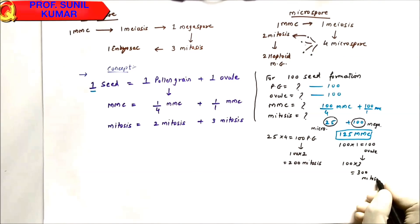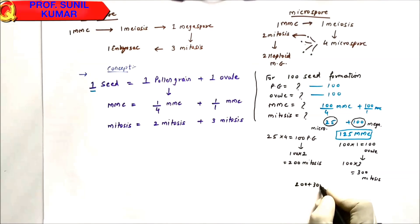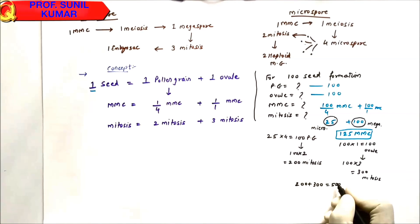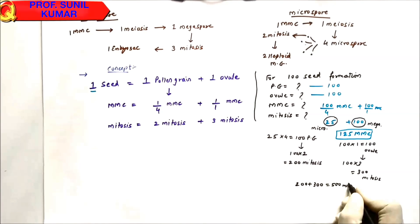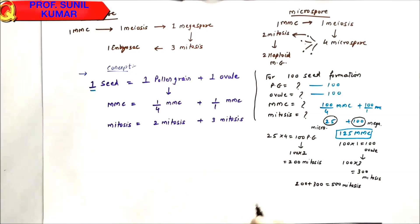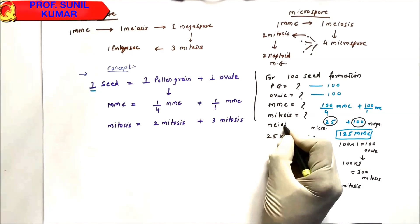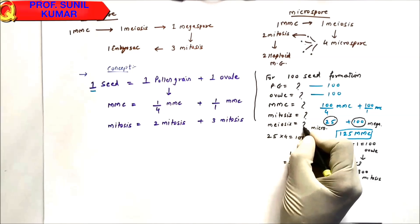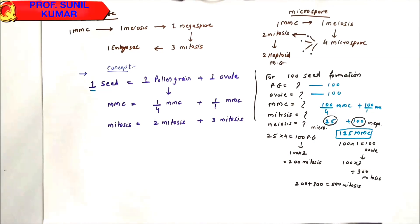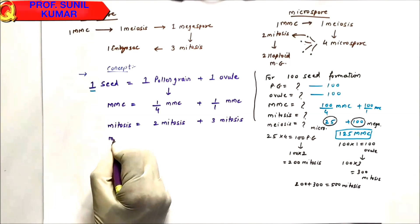Total mitosis = 200 + 300 = 500 mitoses required. For meiosis: since meiosis count equals MMC count, for 100 seeds it is 100 ÷ 4 meioses for pollen grain plus 100 ÷ 1 meioses for ovule.